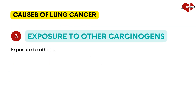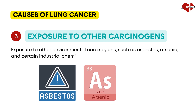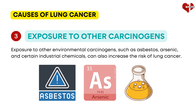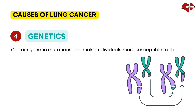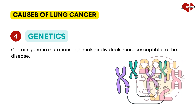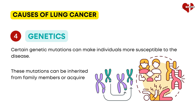Exposure to other environmental carcinogens, such as asbestos, arsenic, and certain industrial chemicals, can also increase the risk of lung cancer. These substances can be found in various workplaces and can be inhaled, causing damage to the tissues in the lungs. In addition to external factors, genetics also play a role in the development of lung cancer. Certain genetic mutations can make individuals more susceptible to the disease, and these mutations can be inherited from family members or acquired during a person's lifetime due to environmental exposure.